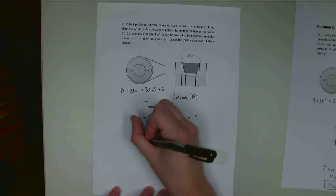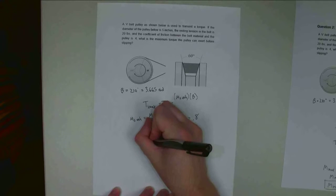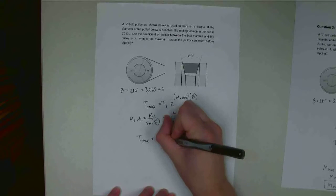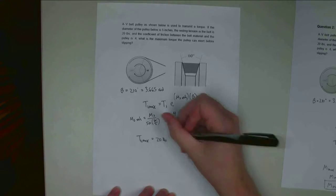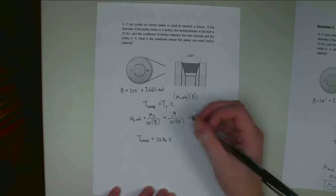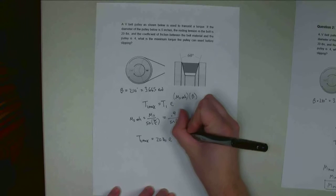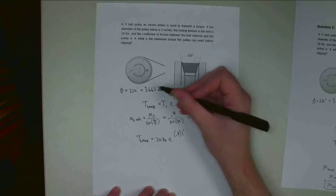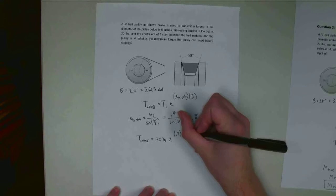So T2 max, I don't know that. T1, I do know that. It's going to be 20 pounds. I've got mu static enhanced. That is 0.8. And my beta, my contact angle is this 3.665 radians.